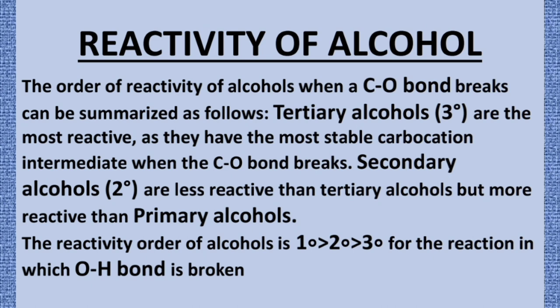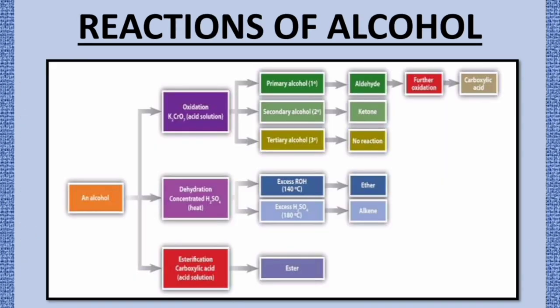Now we see the reactivity order of alcohols. When the C–O bond breaks, tertiary alcohol is most reactive because it forms the most stable carbocation. After tertiary comes secondary alcohol, and then primary alcohol. So when the C–O bond breaks, reactivity order is: tertiary > secondary > primary.